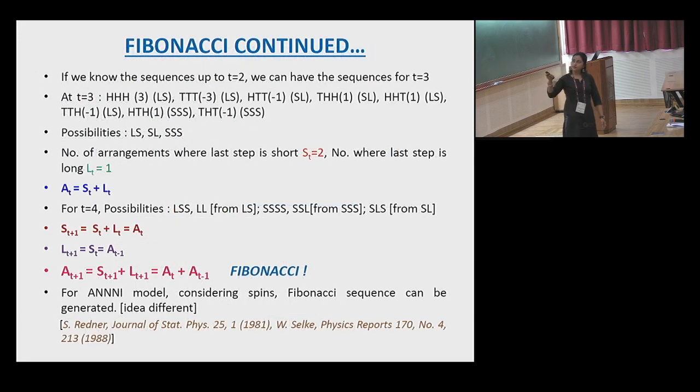This is what I have at time step three. There are some possibilities which can be categorized in three possibilities: LS, SL, or SSS. What are the number of arrangements I am having for this? If I am checking whether the last step is a short step or last step is a long step. If the last step is a short step, I define it as S_T, which is two here. If the last step is a long step, it's L_T, which is one. So the total arrangement is S_T plus L_T.